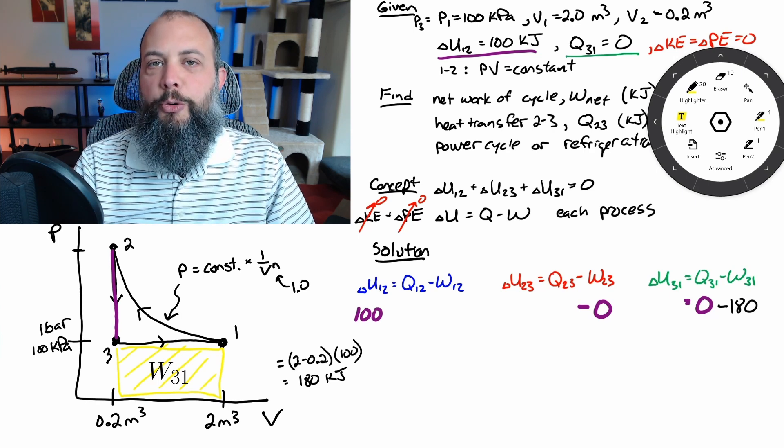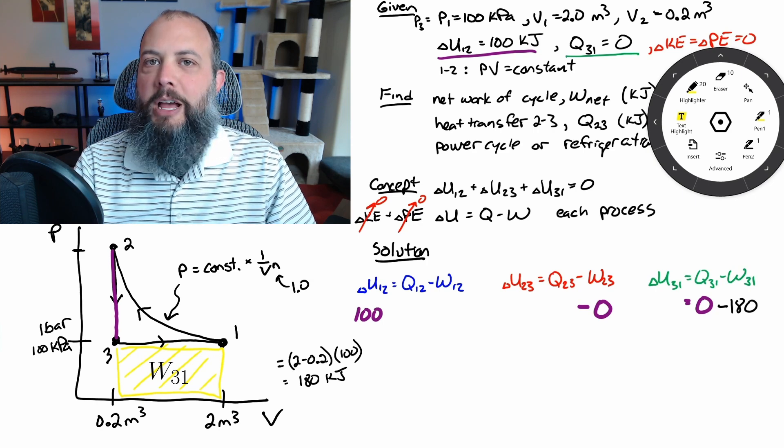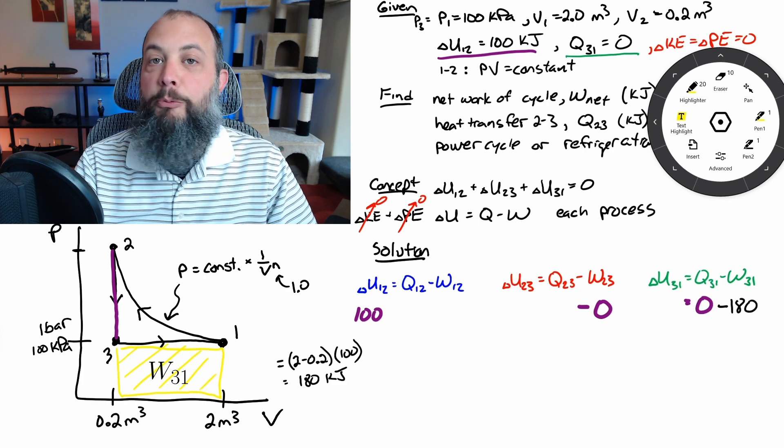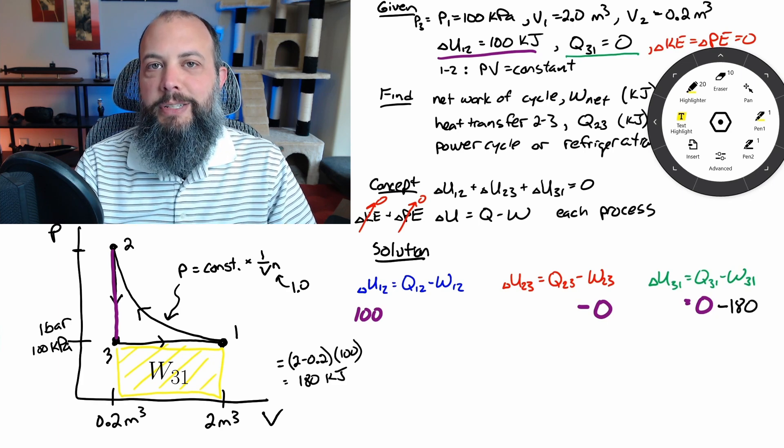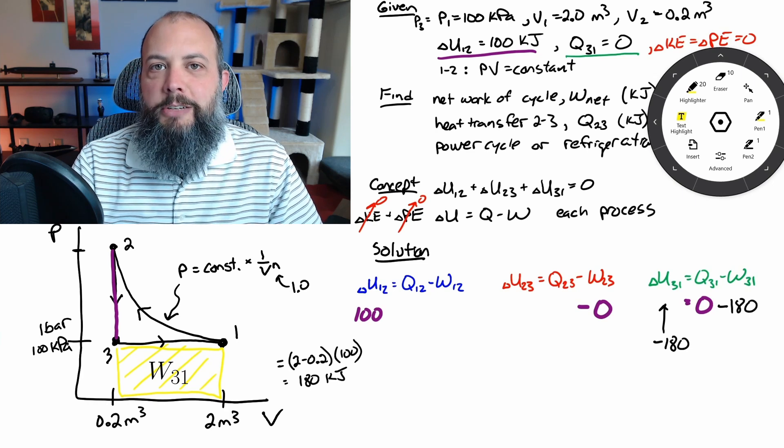So that 180 when plugged into the equation becomes negative because that represents energy leaving the system and from that third equation we can now get negative 180 for the internal energy from three to one.